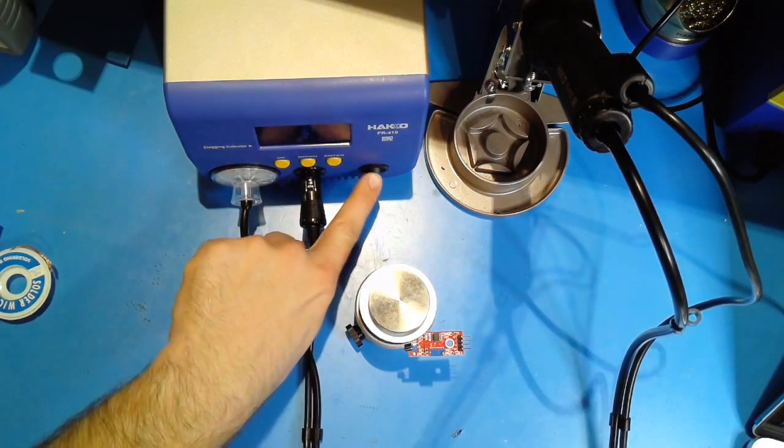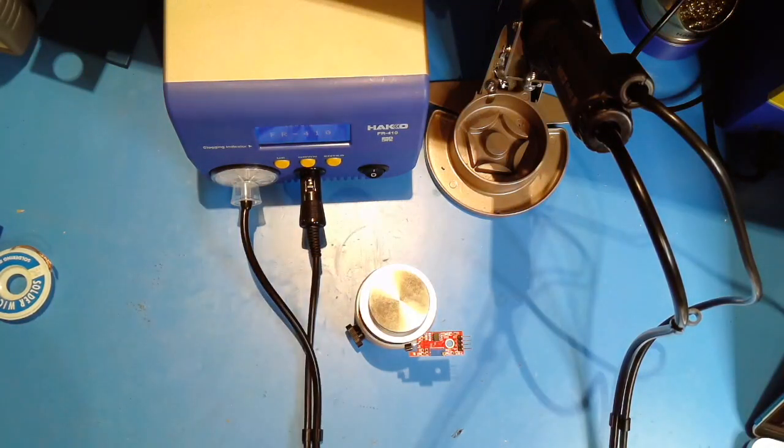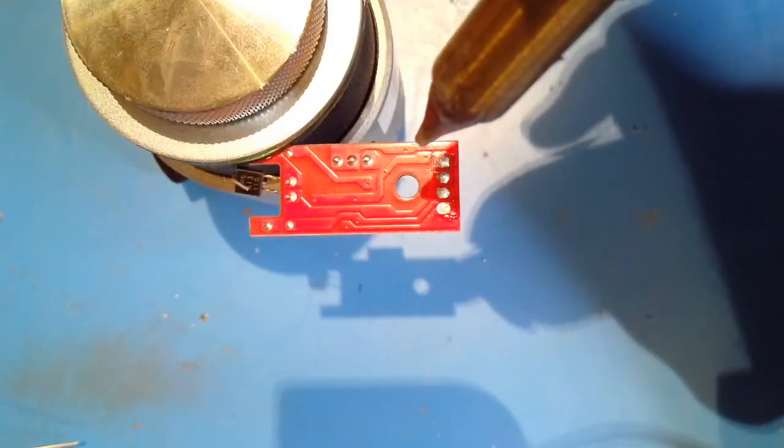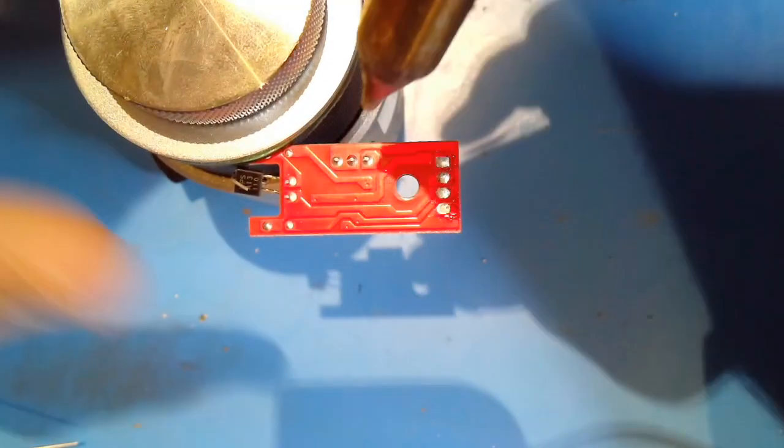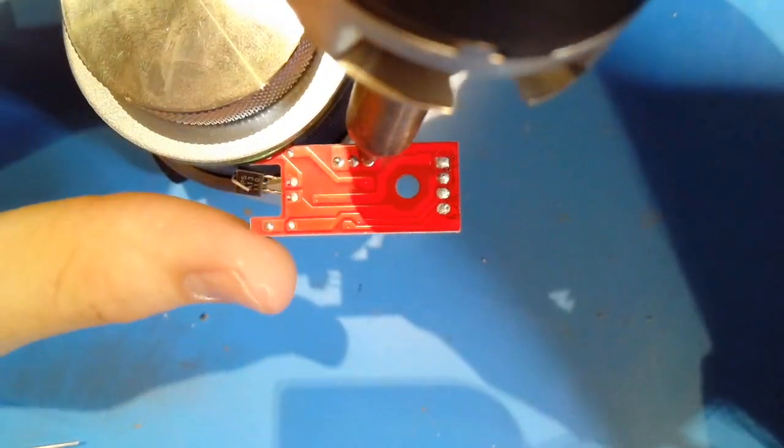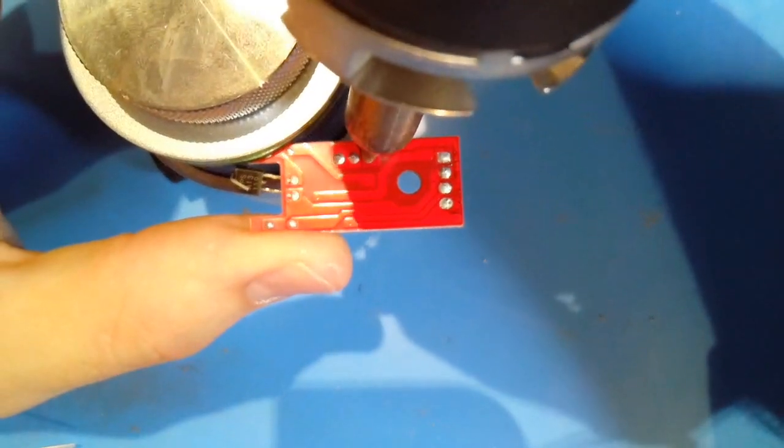The third is a vacuum pump. Turn the pump on. Place the tip over the joint to be desoldered. Press the button on the pump handle and let it do the work for you.